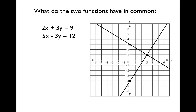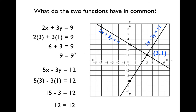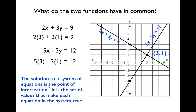So, what do these functions have in common? Do you notice anything? They've got this point in common right here, and that point is (3, 1). What is this common point to these two functions? Well, it is a point — or a solution — that both functions share. If we plug 3 in for x and 1 in for y into the first function, we get a true statement: 9 equals 9. Plugging those same values into the second function, we get another true statement: 12 equals 12. So what we can discover here is the solution to a system of equations is the point of intersection — it is the set of values that make each equation in the system true.